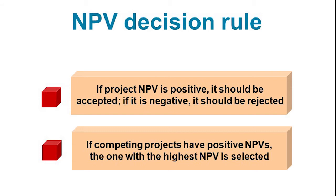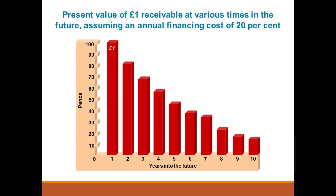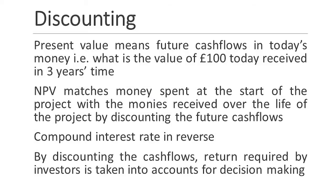If net present value is positive, we should accept the project; if it's negative, we should reject it. However, although this is the main guiding principle, in some scenarios our final decision could be different. Money loses value — just like we've learned that 100 pounds now is better than 110 pounds in the future. If the cost of capital is 20 percent, the value of one pound reduces every year, and we can calculate that.